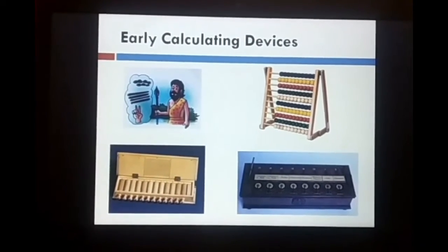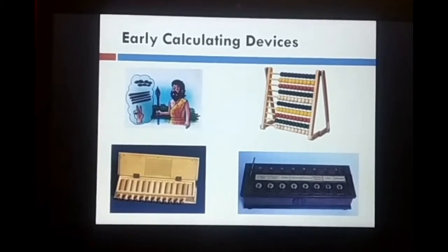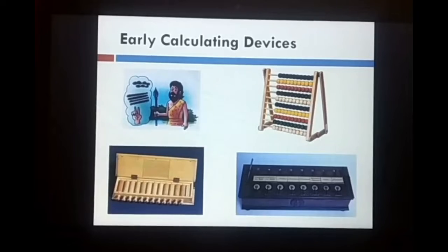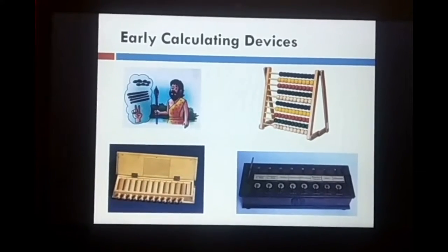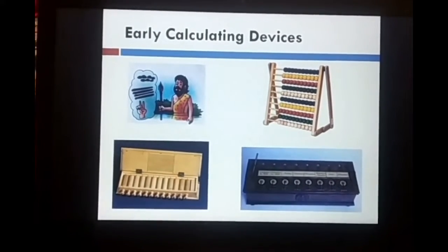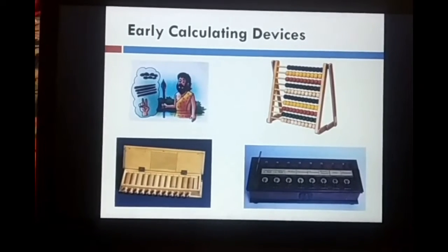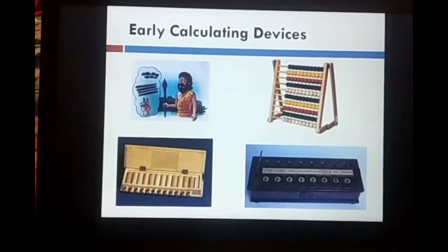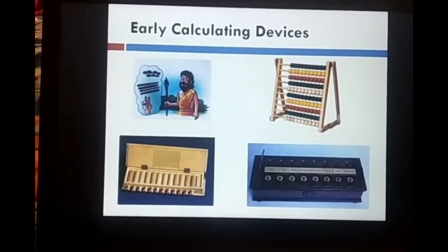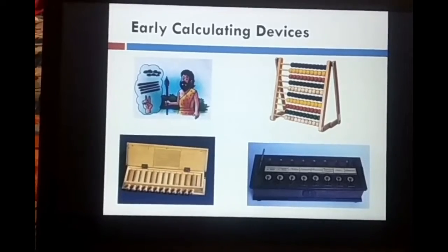These are some calculating devices. First, early human beings used fingers, sticks, and stones to calculate. Then the abacus. The third figure is Napier's bone, and the fourth is Pascaline.